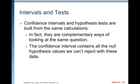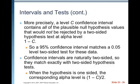Confidence intervals and hypothesis tests are built from the same calculations — they are complementary ways of looking at the same question. The confidence interval contains all the null hypothesis values we can't reject with these data. A level C confidence interval contains all the plausible null hypothesis values that would not be rejected by a two-sided hypothesis test at alpha level 1 minus C. So a 95% confidence interval matches a 0.05 level two-sided test. When the hypothesis is one-sided, the corresponding alpha level is 1 minus C over 2.